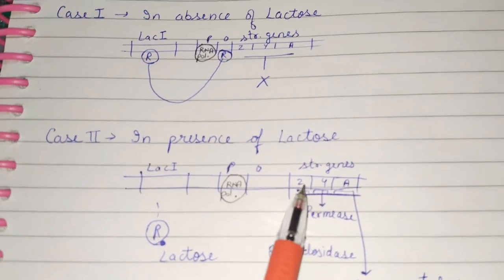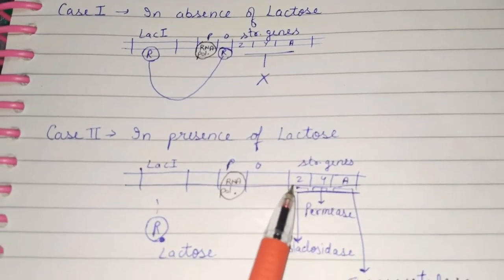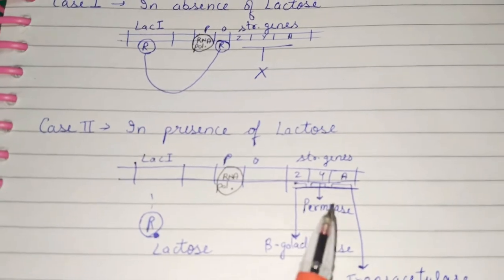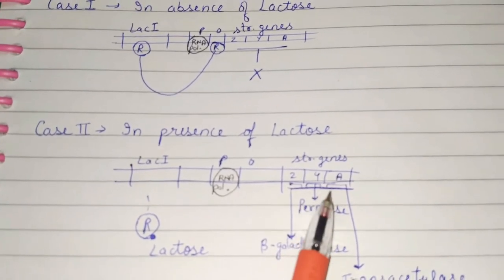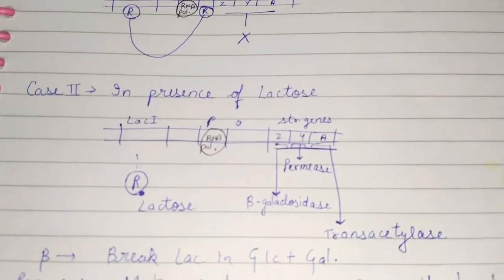It has mainly three structural genes: Z, Y, A. Z gives rise to beta-galactosidase. Y gives rise to permease. And A gives rise to transacetylase.